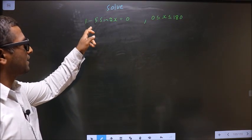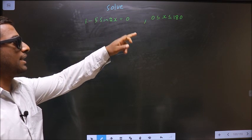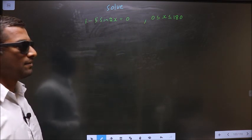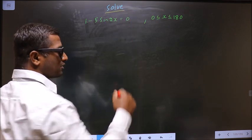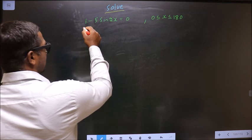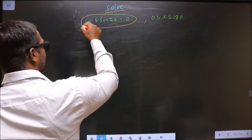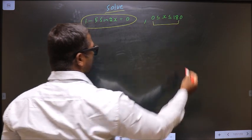Solve 1 minus 5 sin 2x equal to 0, where x lies in the interval 0 to 180. They told you to solve, so you should find the values for x satisfying the equation that also lie in the interval 0 to 180.